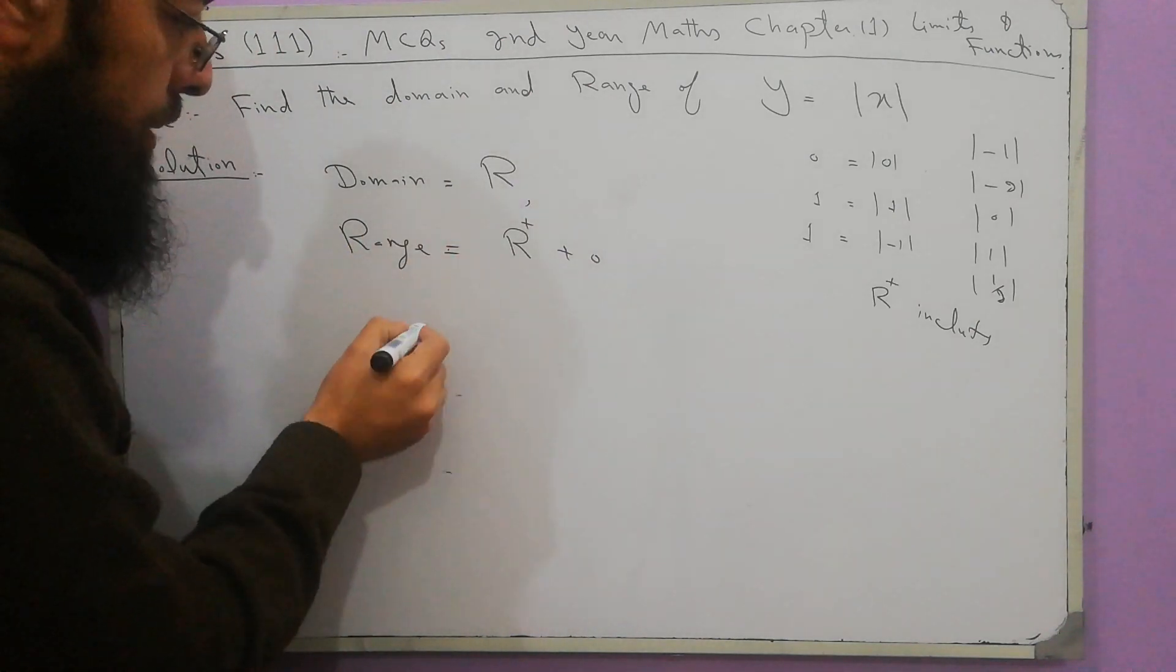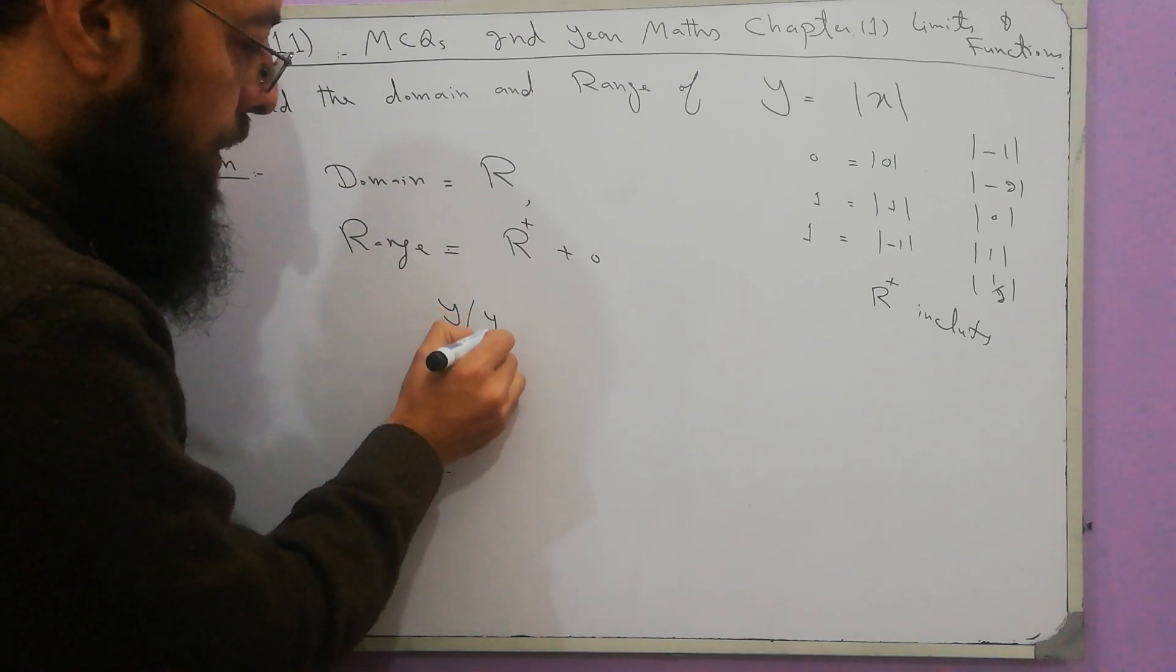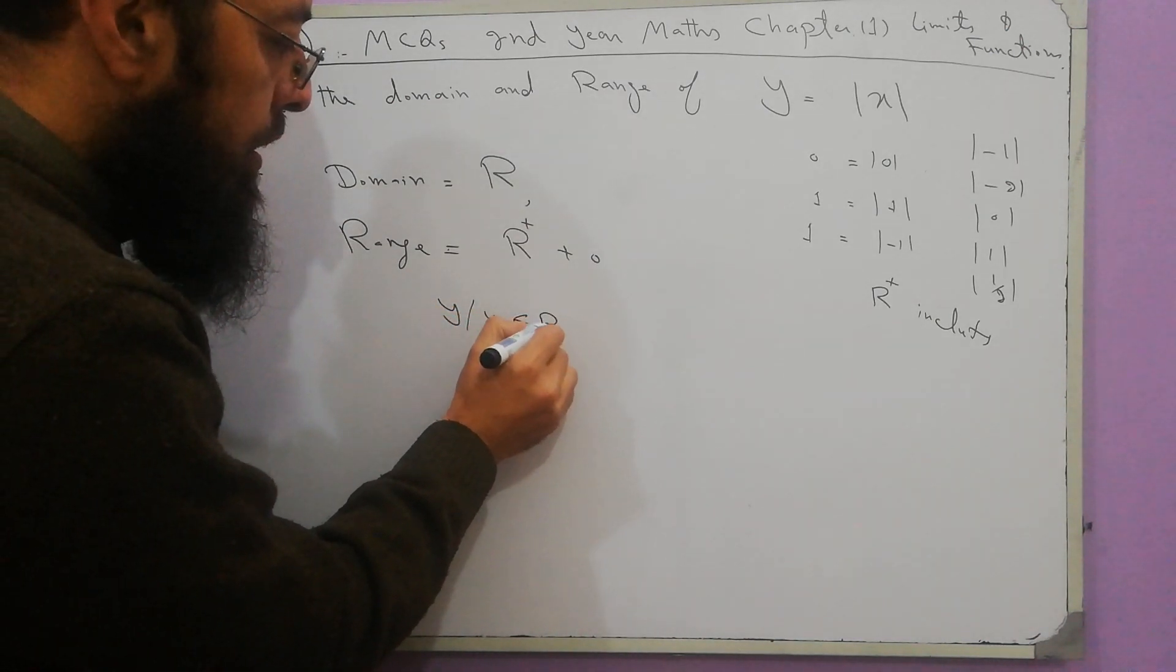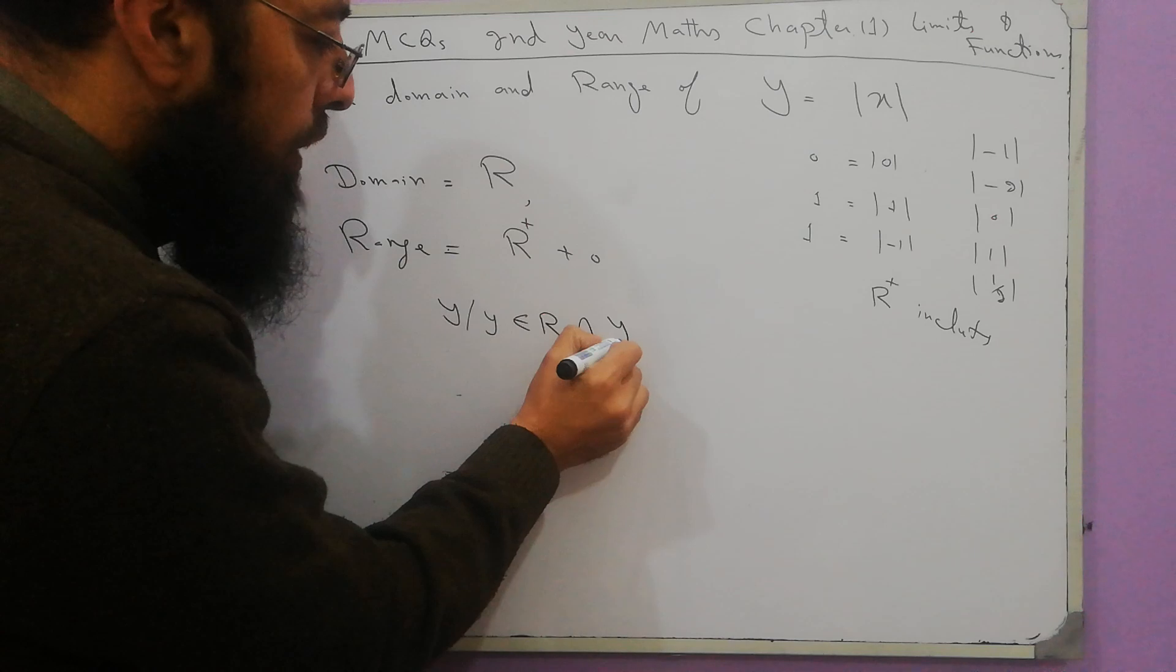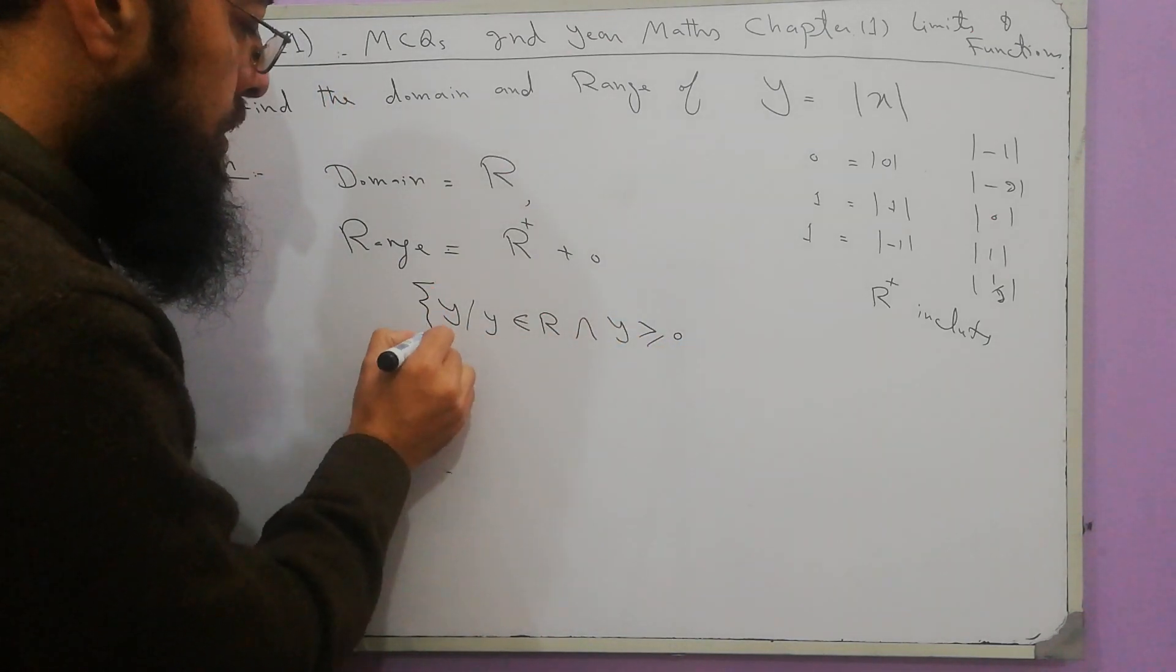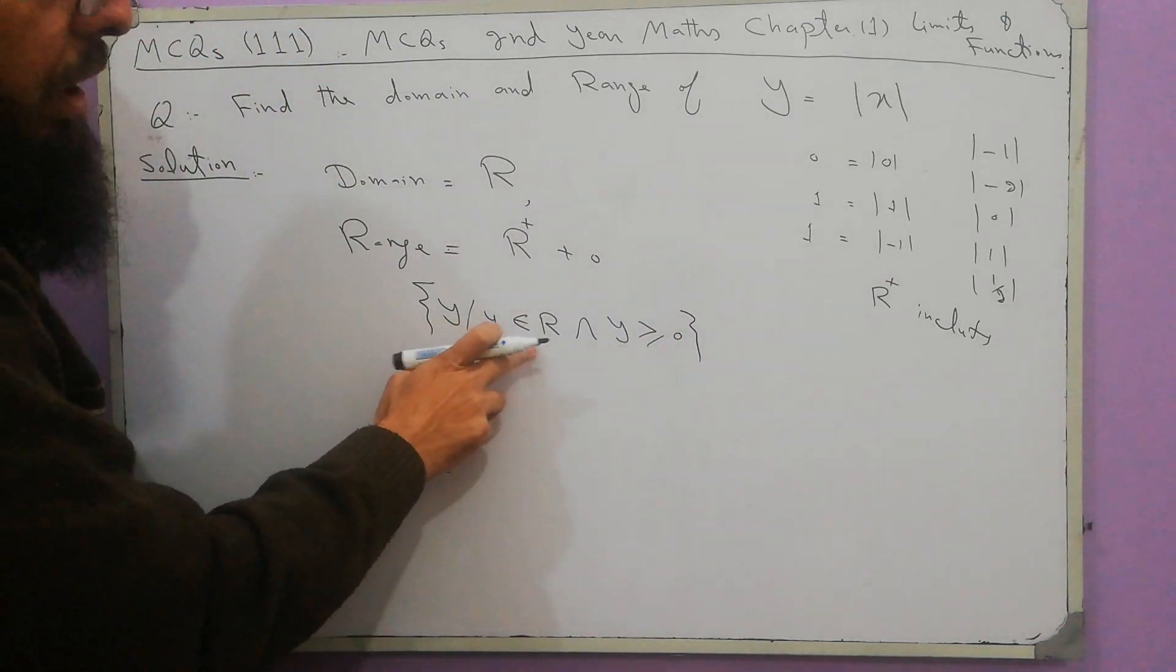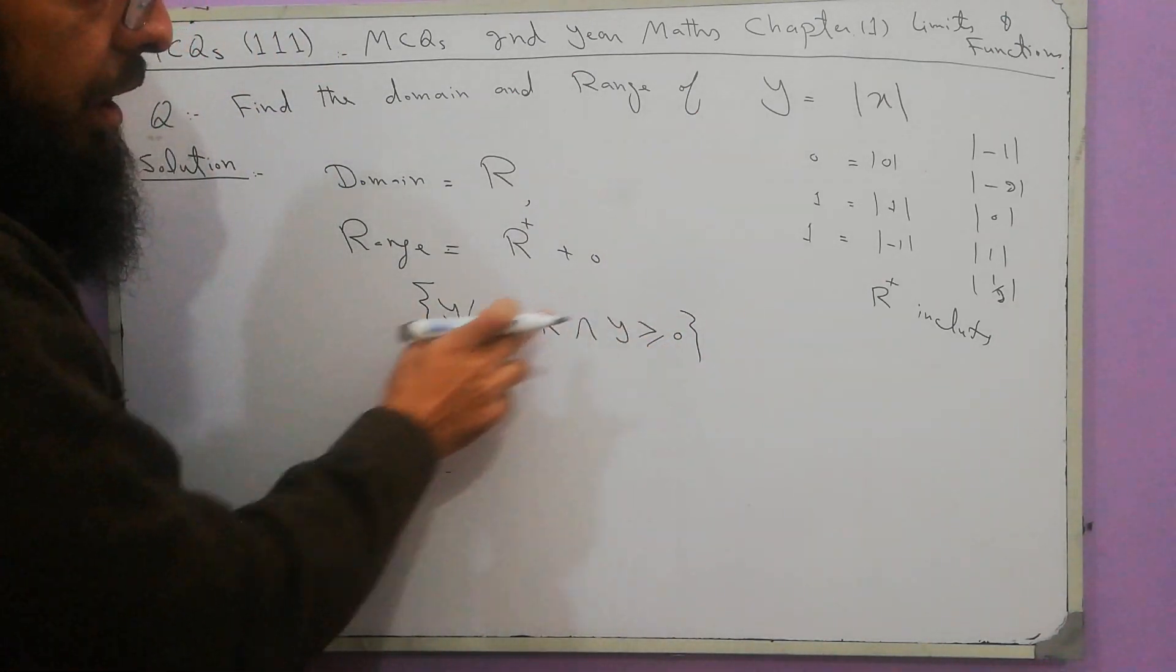I can write this in other form: Y such that Y belongs to R and Y greater than or equal to 0.